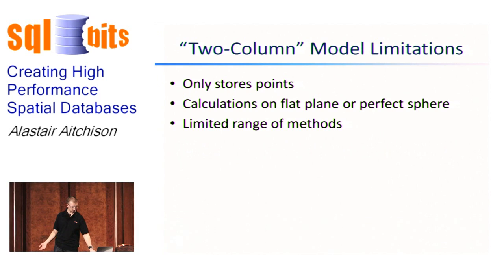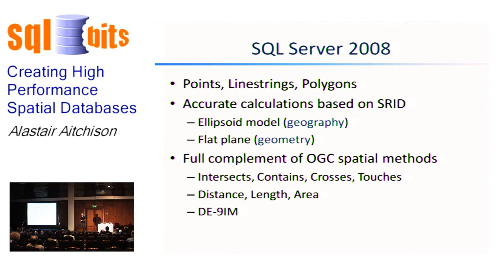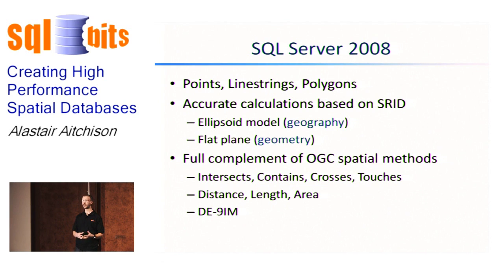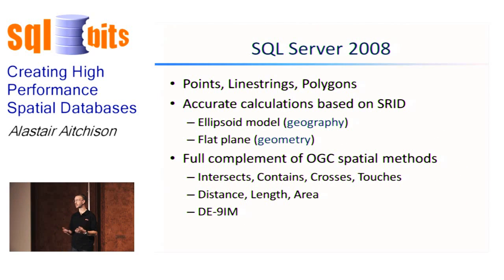Along comes SQL Server 2008. In SQL Server 2008, not only can we store points, we can store line strings — a connected series of points — we can also store polygons, and we can store complex shapes: polygons with holes in them, multi-polygons, and geometry collections. SQL Server 2008 stores spatial data as a CLR UDT type, which means every individual item of spatial data can be up to two gigabytes in size — sufficient to store even the outline of most countries at a reasonable level of detail.